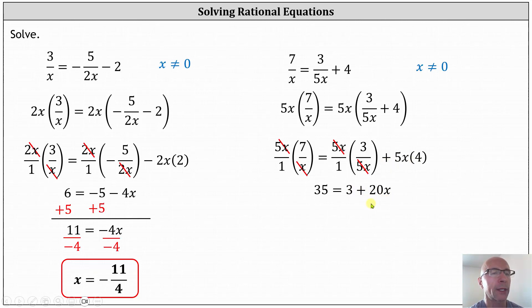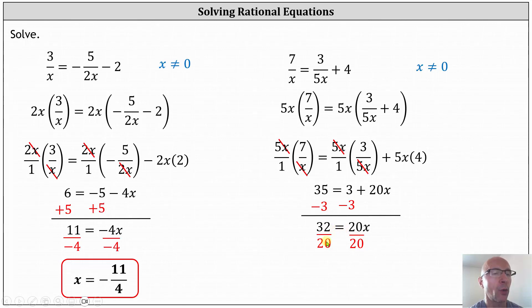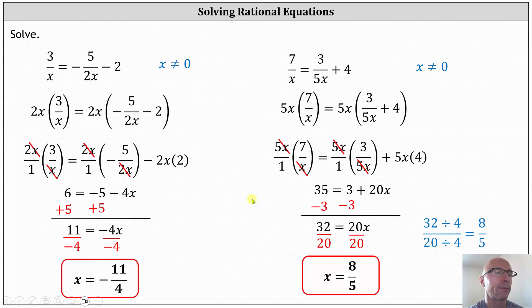To solve this equation, for the next step we subtract three on both sides. Simplifying, we have 32 equals 20 x. And for the last step, we divide both sides by 20. Simplifying, we have x equals 32 twentieths. But 32 twentieths does simplify — 32 and 20 share a common factor of four, so 32 twentieths simplifies to 8 fifths. Our final simplified solution is x equals 8 fifths. I hope you found this helpful.